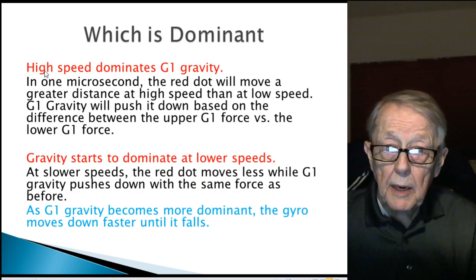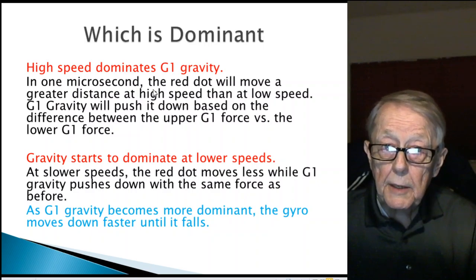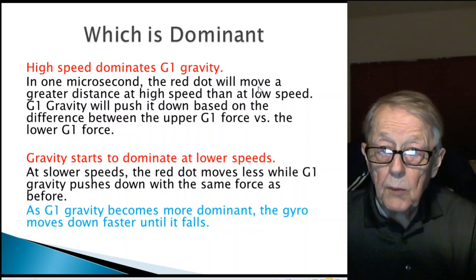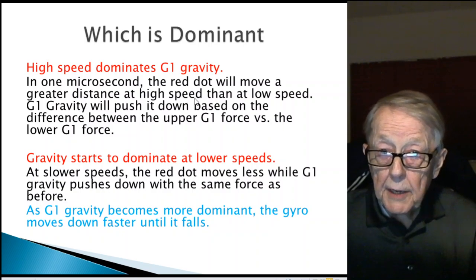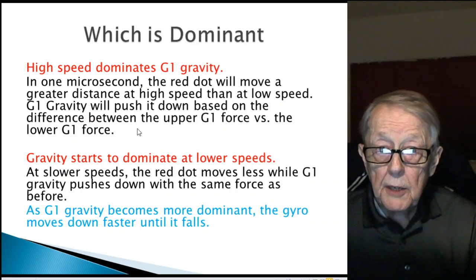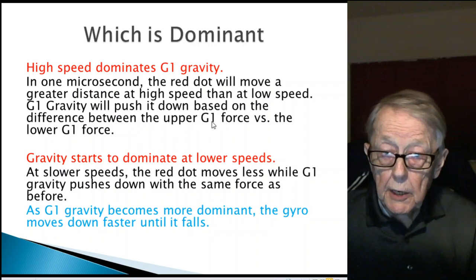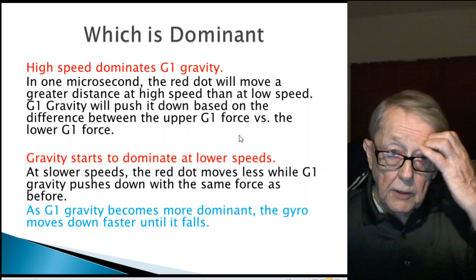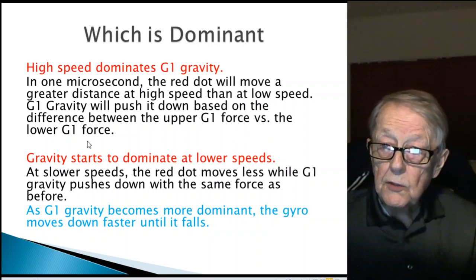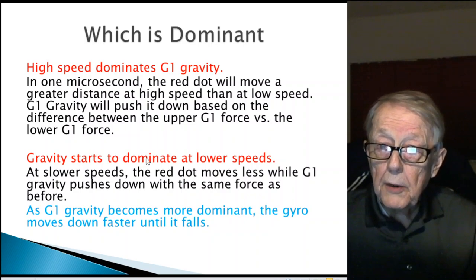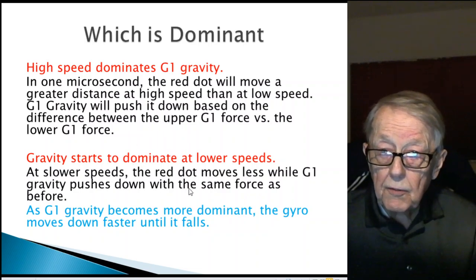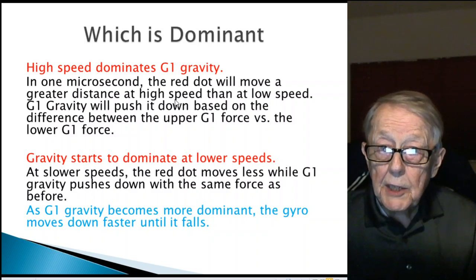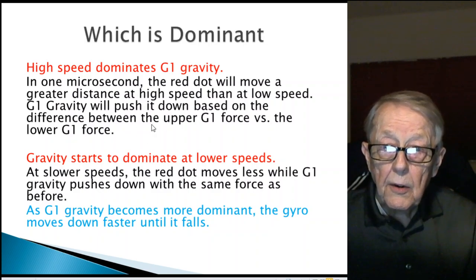Which is dominant? I'm claiming the high speed dominates gravity. When there's a high speed, in that one microsecond period, the red dot will move a greater distance when it's at a high speed than when it's at a low speed. G1 gravity will push it down based on the difference between the upper G1 force versus the lower G1 force. You get this vertical movement and you get the movement of the red dot around. It follows the geometry of the rotor itself. Because it's moving at a high speed, this distance moves more, gravity moves less.